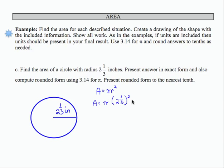If I do, I'm going to start by finding an improper fraction. So that's going to be 7/3 squared. And then multiplying 7/3 times 7/3 will give me pi times 49/9.